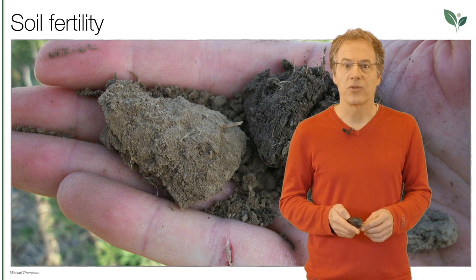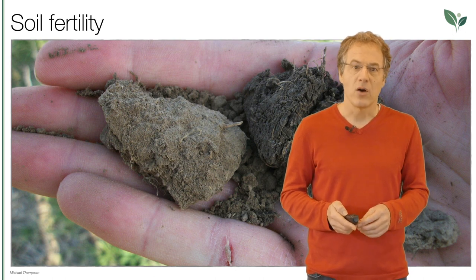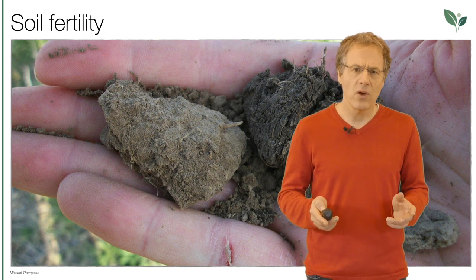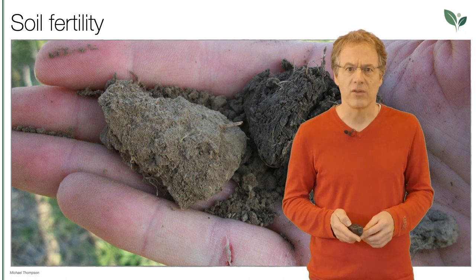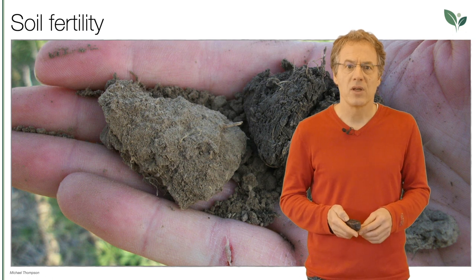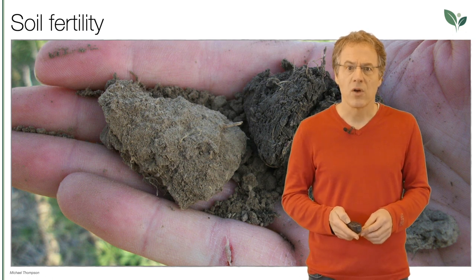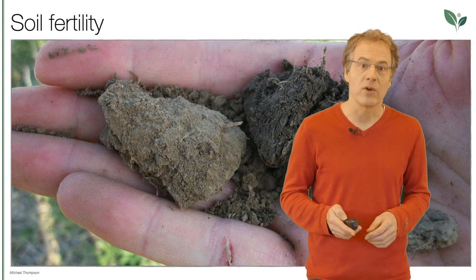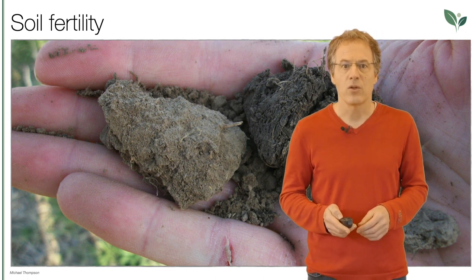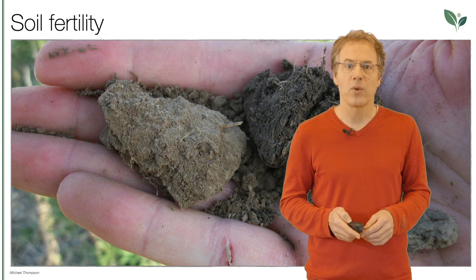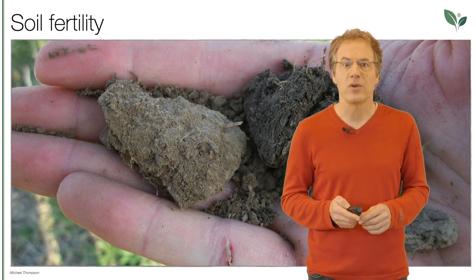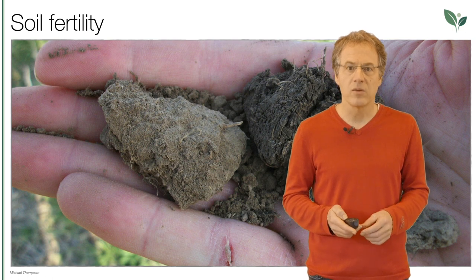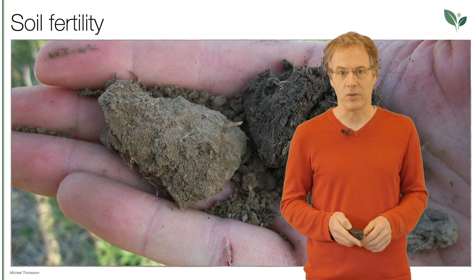Here we see the soil of two fields — one on the right, the other on the left side of a road. Same soil, equal basic conditions. The one on the left has been conventionally worked with plowing, monocultures, chemical fertilizers, and pesticides. The one on the right has been worked with methods of regenerative agriculture. The difference is clearly visible and self-explanatory.